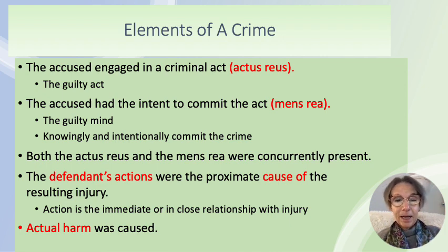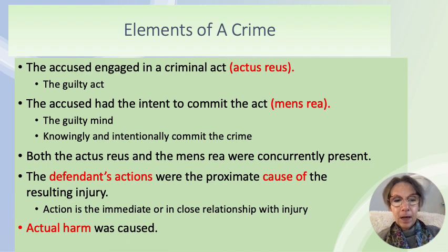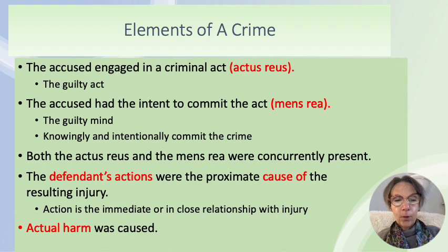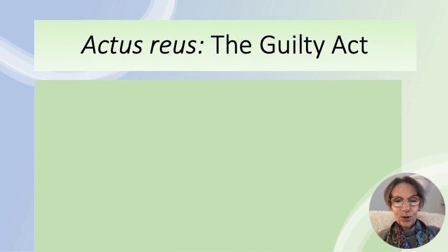Additionally, the defendant's actions must be the proximate cause of the resulting injuries — meaning the actus reus caused the harm to the victim — the action must be in close relationship with the injury, and actual harm must have been caused. We're going to focus on four elements: actus reus, mens rea, proximate cause, and actual harm. Concurrence basically means the act and intent must be present at the same time.